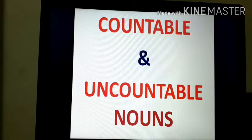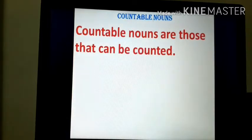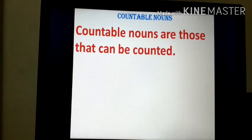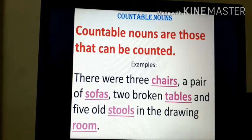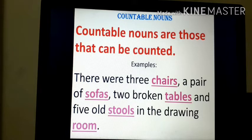Countable nouns are those that can be counted. For example: there were three chairs, a pair of sofas, two broken tables and five old stools in the drawing room. Chairs, sofas, tables, stools and room are countable nouns. It means things which can be counted using numbers are countable nouns.